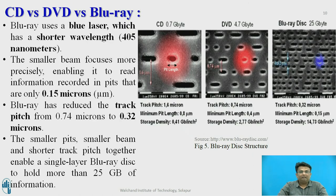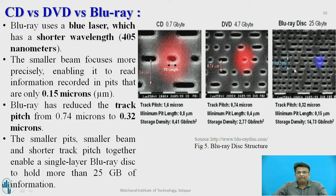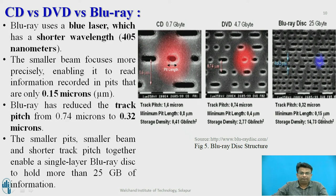The difference between CD, DVD, and Blu-ray disc: A microscopic view shows that the pit length of a CD is much larger than that of a DVD and Blu-ray; the DVD pit length is again larger than that of Blu-ray. The minimum pit length of a Blu-ray disc is about 0.15 micrometers, whereas for a DVD it is about 0.4 micrometers and for a CD it is about 0.8 micrometers.